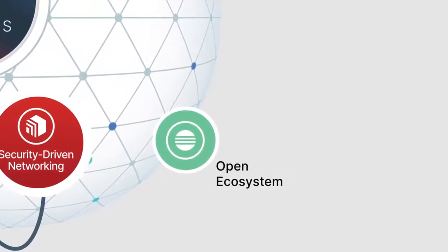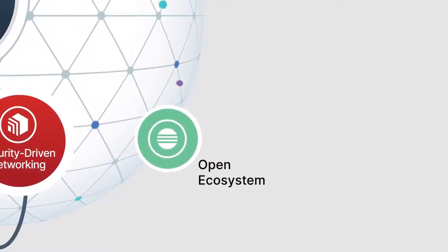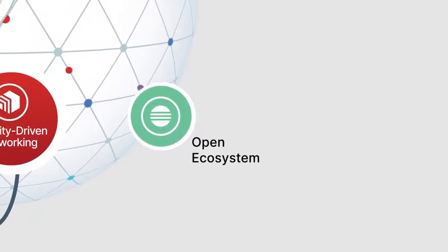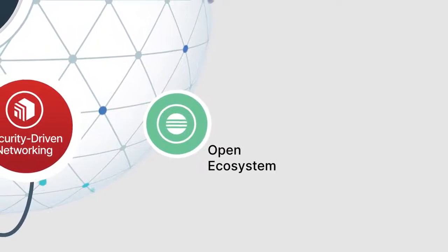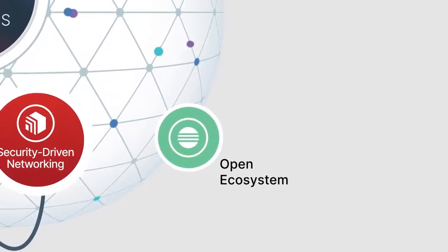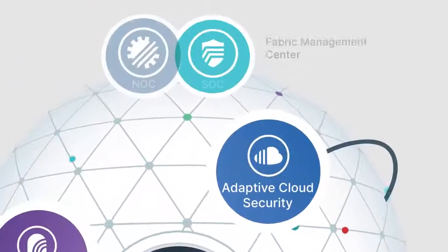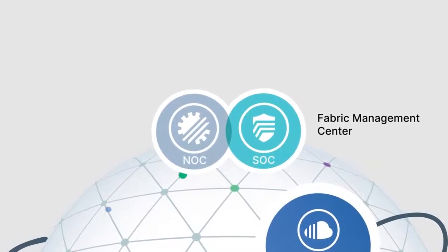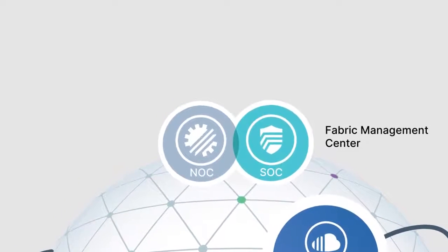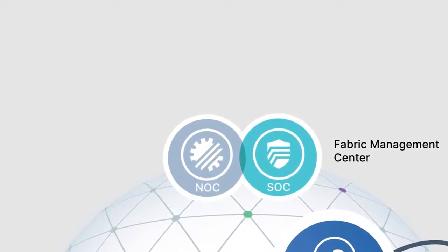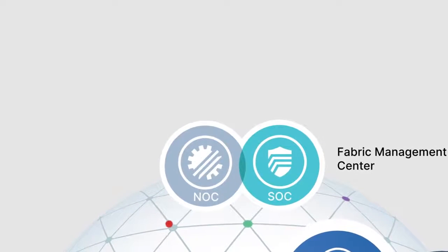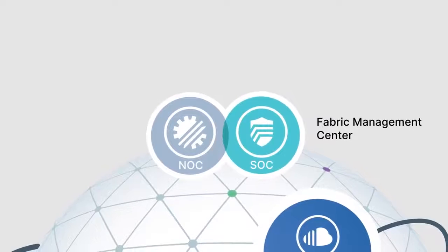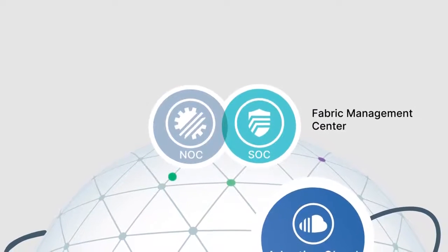To help organizations more effectively leverage their existing security investments, fabric connectors and APIs create an open ecosystem so existing solutions can be easily connected into the Security Fabric. A single fabric management center provides centralized control of every fabric element, ensuring that everything is integrated and communicating, orchestrates policies, correlates and shares threat intelligence, and automatically enables a coordinated response to detected security events.